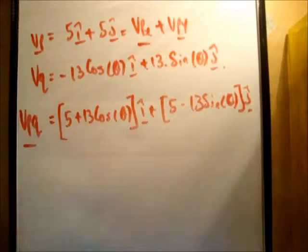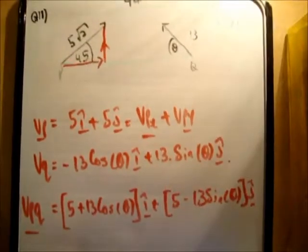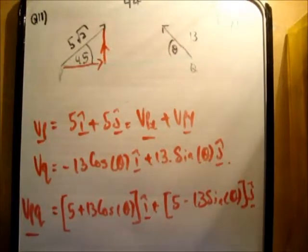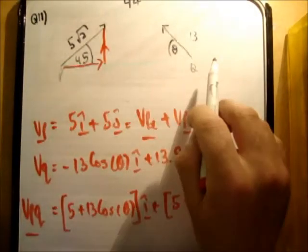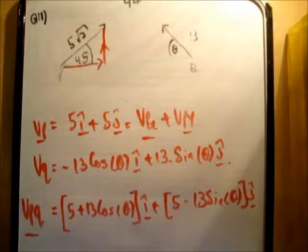Now, if they are to be on a collision course, then their velocities in the J hat unit vector direction must be equal. So why is that? Well, if we move back up here, they've started on the same height along the y axis. So if they collide, well, they must have the same height again.